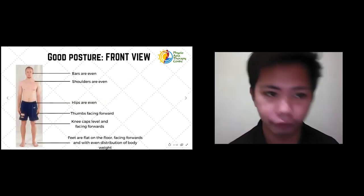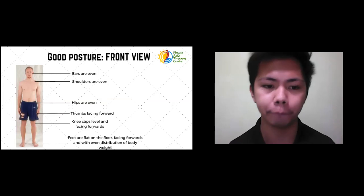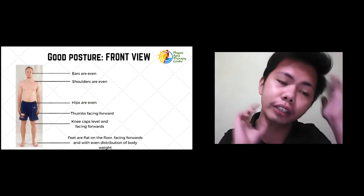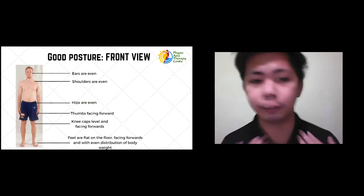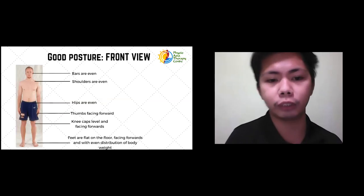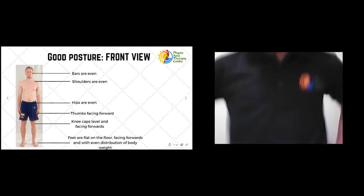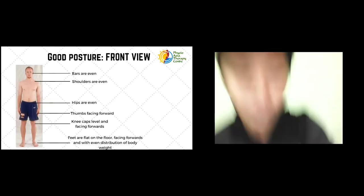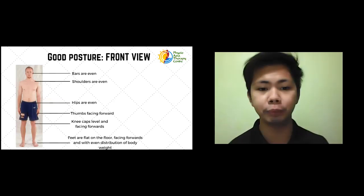Good posture as viewed from the front should satisfy these points. First, the ears should be even — if one ear is higher than the other, you probably have a head tilt. Next, the shoulders should be even; you can check your collarbones. If one collarbone is higher than the other, that's a side tilt. Then, we check if the hips are even by checking your abdominal fold and the top of your pelvis. If one side of the pelvis is higher than the other, it's not good posture.